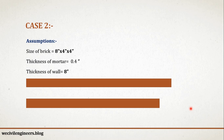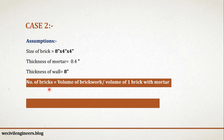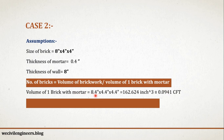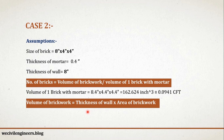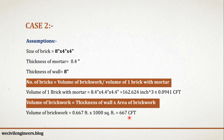Now let's see how many bricks we need if the size of brick is 8 inch by 4 inch by 4 inch. In this case, the thickness of mortar remains the same — that is 0.4 inch — but the thickness of wall is different, because the full brick size is 8 inch. The volume of one brick with mortar equals 8.4 multiplied by 4.4 multiplied by 4.4, which gives 162.624 cubic inch, equivalent to 0.0941 cubic feet. The volume of brickwork equals 0.667 foot multiplied by 1000 square foot, since 8 inch equals 0.667 foot, giving 667 cubic foot.